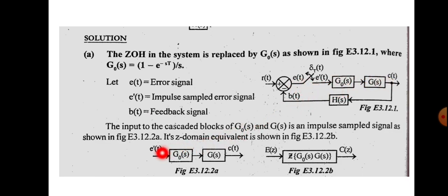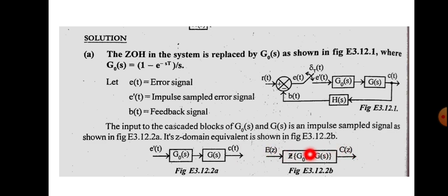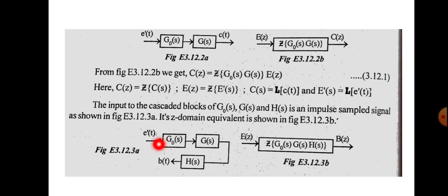Taking the forward path: the input to the forward path is e*(t) and the output is c(t). In terms of Z-transform, since the sampler precedes G0(s) and G(s), the block transfer function is Z{G0(s)·G(s)}. The input is E(z) (the Z-transform of e*(t)) and the output is C(z). So C(z) = Z{G0(s)·G(s)} · E(z).